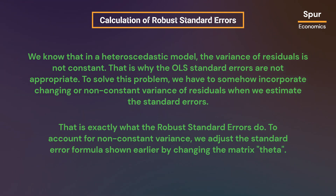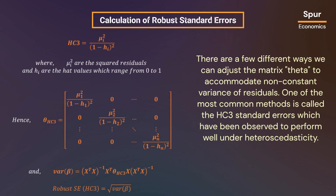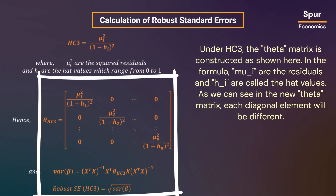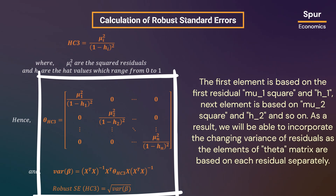To account for non-constant variance, we adjust the standard error formula by changing the matrix theta. One of the most common methods is called HC3 standard errors, which have been observed to perform well under heteroscedasticity. Under HC3, the theta matrix is constructed as shown here. In the formula, mu-i are the residuals and h-i are called the hat values. As we can see in the new theta matrix, each diagonal element will be different — the first element is based on the first residual mu-1 squared and h-1, the next on mu-2 squared and h-2, and so on.